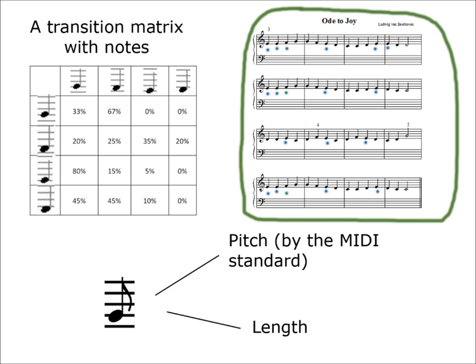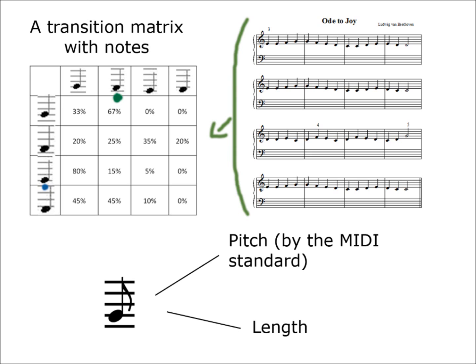First, we take an existing piece of music and make a statistic which shows for every note X how often the note Y comes directly after it. This statistic could also be done for many separate melodies. The results are written into a table or matrix.